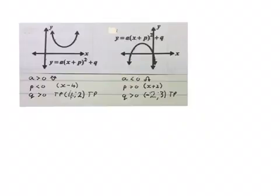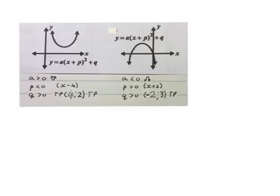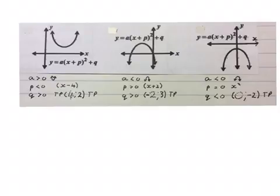A is negative — smaller than zero — because it's an unhappy parabola, I can see this graph is unhappy. P is bigger than zero, it is positive, because in the bracket there we will have an X plus something to move it to the left-hand side of the Y-axis. And Q is bigger than zero because the turning point is above the X-axis. For example, it might be that X was minus 2 and Y was 3. So A is negative, P is positive, and Q is positive.